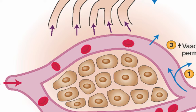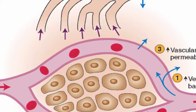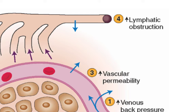Some fluid normally passes to the tissue and cannot get back directly to the blood. This extra fluid is not accumulated in the interstitial space but passes to the lymphatic system, which ultimately drains that fluid back to the blood.